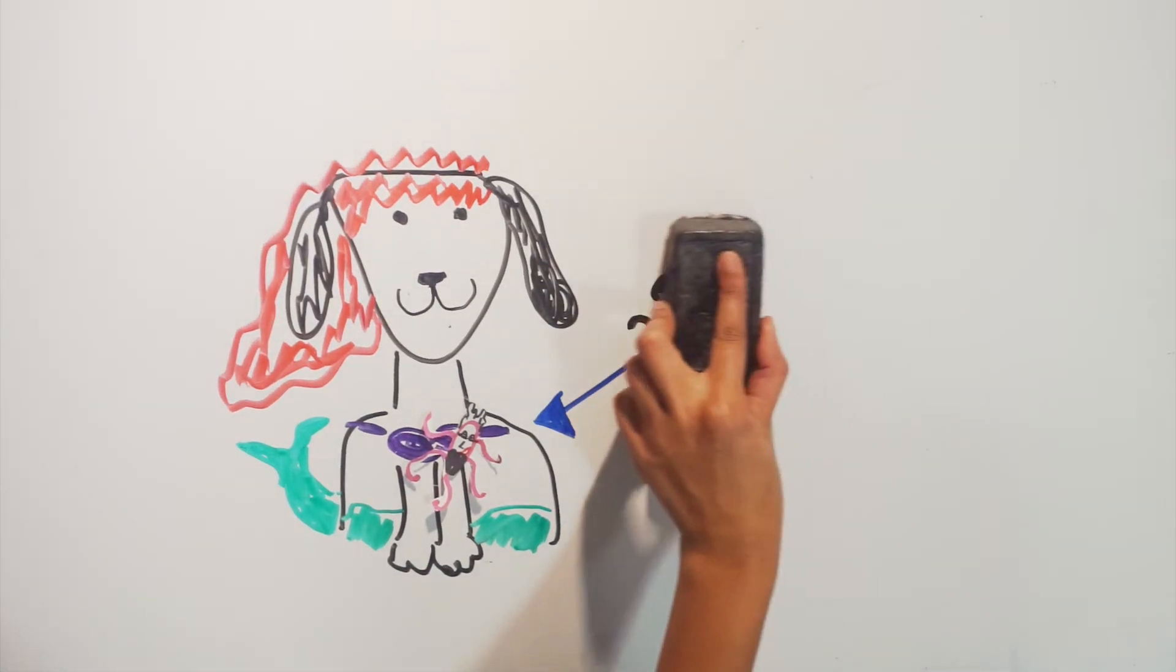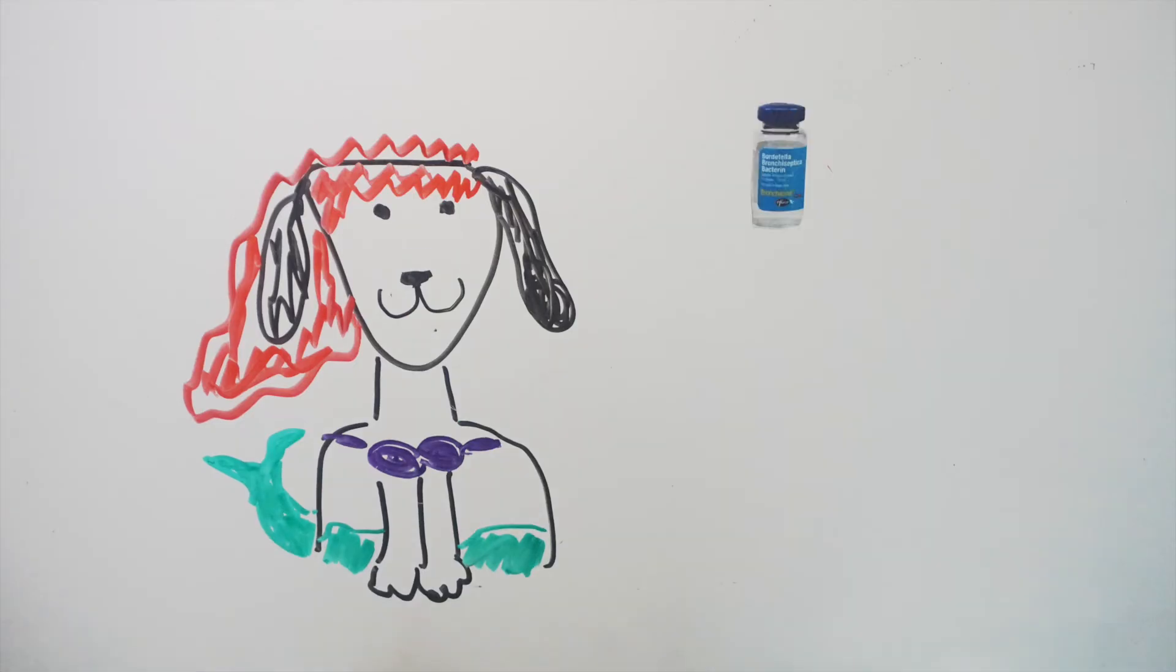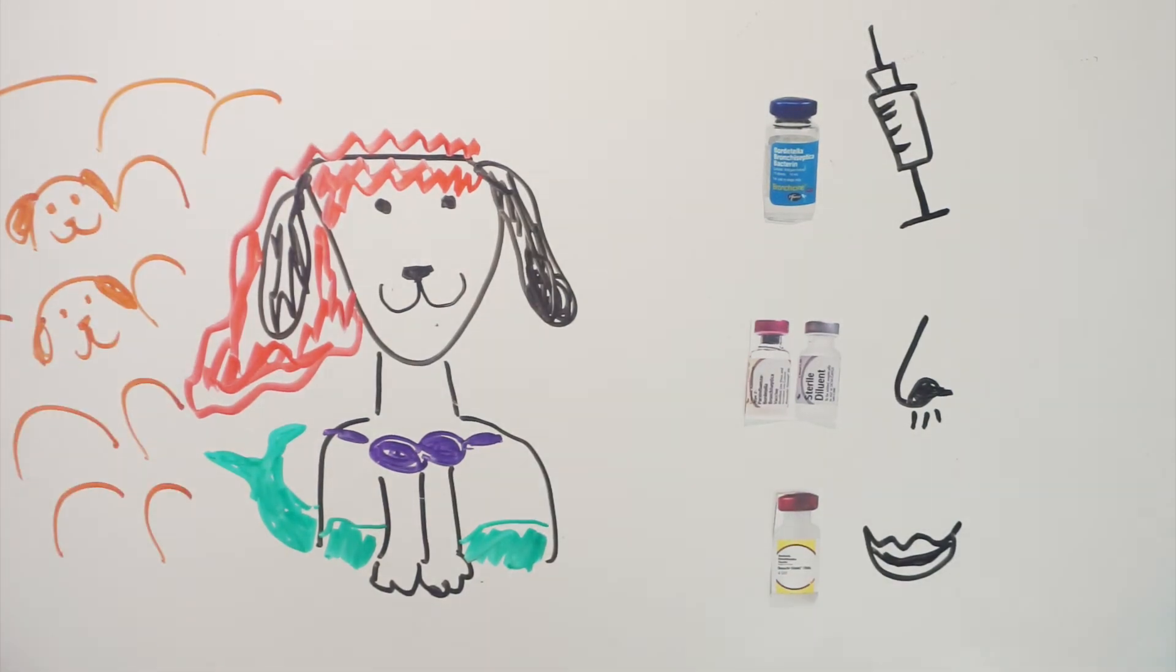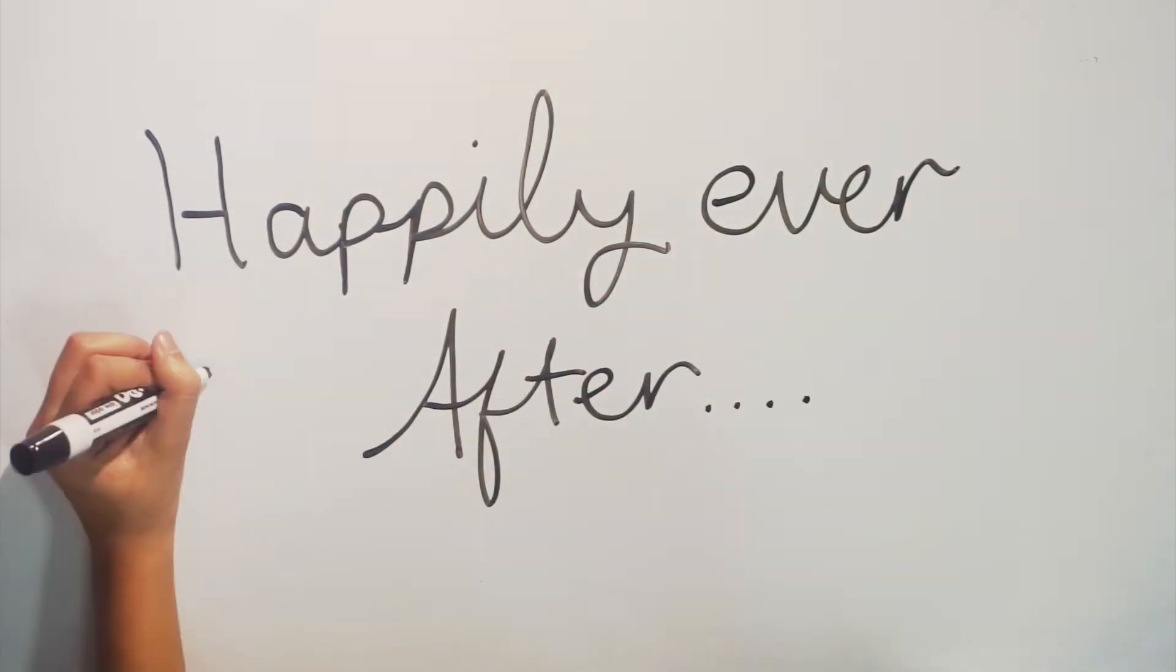The best way to avoid the wrath of Bordetella bronchoseptica is to vaccinate. Subcutaneous, intranasal, and recently oral vaccinations are available and offer good protection. For dogs in high densities, isolation and additional ventilation is required so all can live happily ever after.